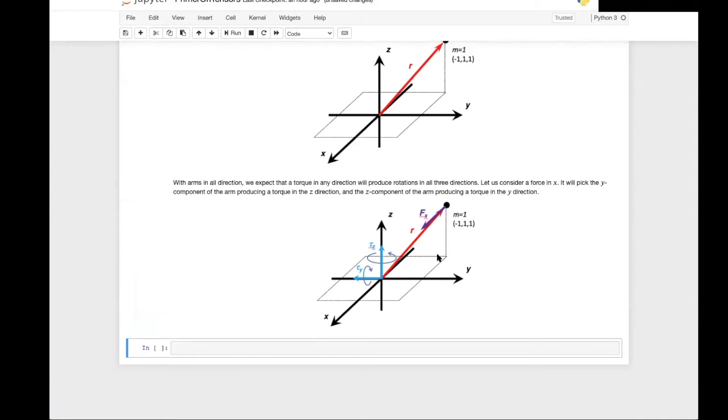So let's consider first a force in x, this force here. So it will pick the y component of the arm and produce a torque in z. Now the z component of the arm is going to be picked by the force and produce a torque in the y direction.